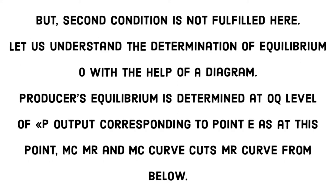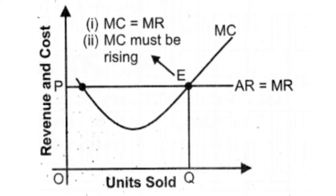Let's understand the determination of equilibrium with the help of a diagram. Producer equilibrium is determined at OQ. You can see in this diagram that the producer equilibrium is determined at OQ, corresponding to point E, where the MC curve cuts the marginal revenue curve from below. The point where the marginal cost curve cuts marginal revenue from below is the producer equilibrium point.